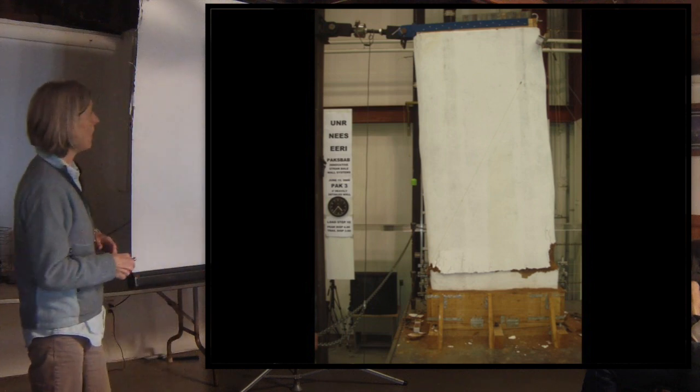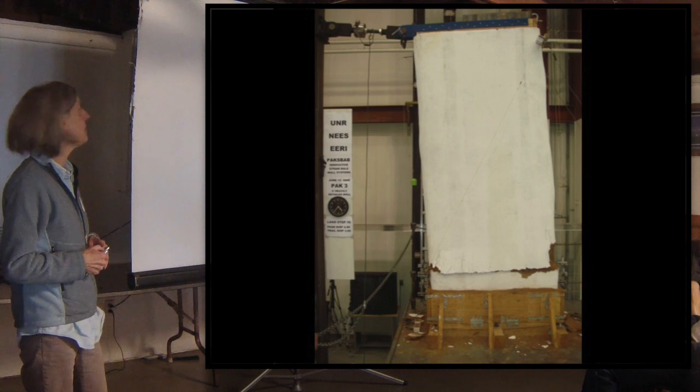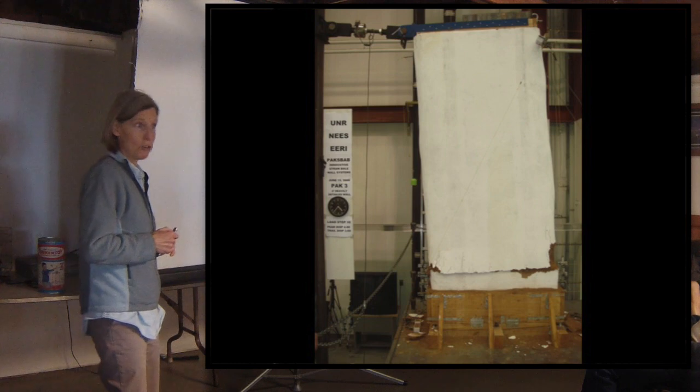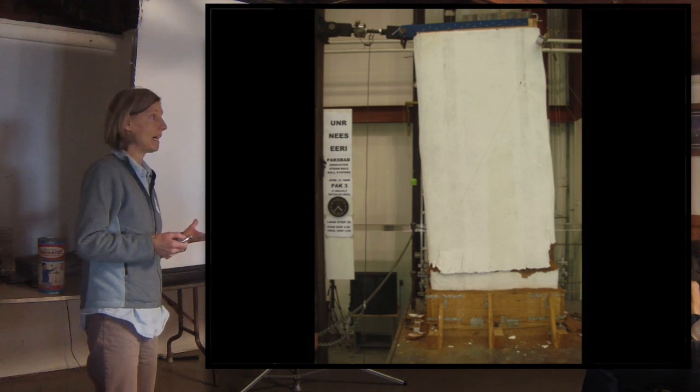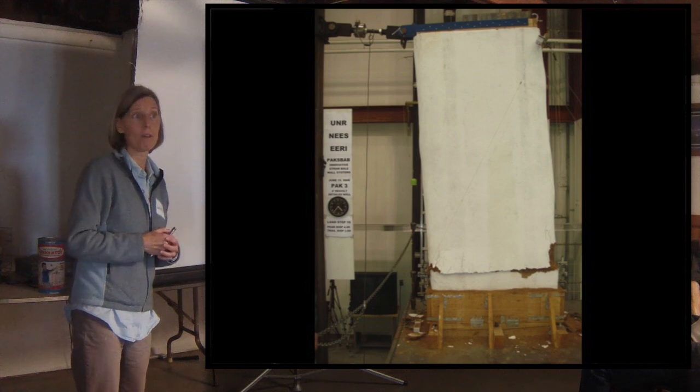So what you see here is one of the four foot long walls. They were all eight feet tall. They were made from earthen plaster construction, straw bales like we make in Pakistan. So they were 12 by 12 inch bales, 24 inches long.